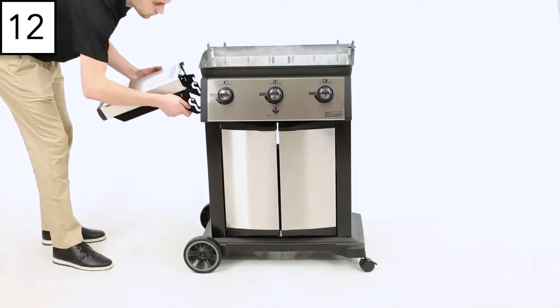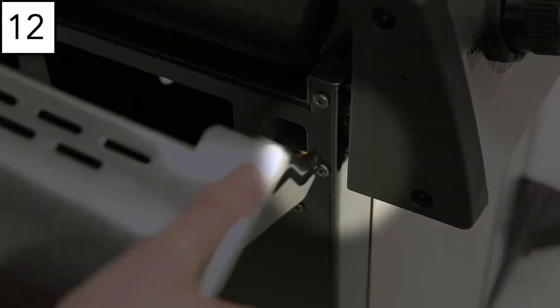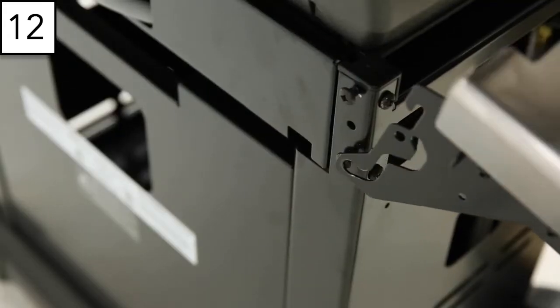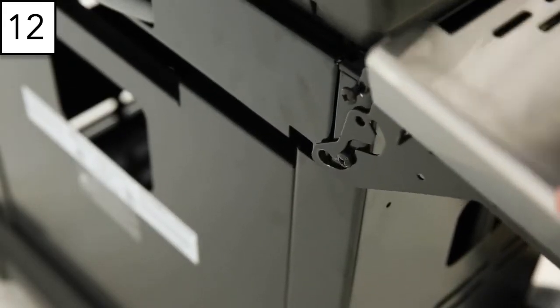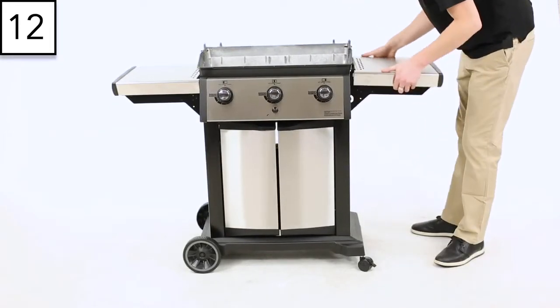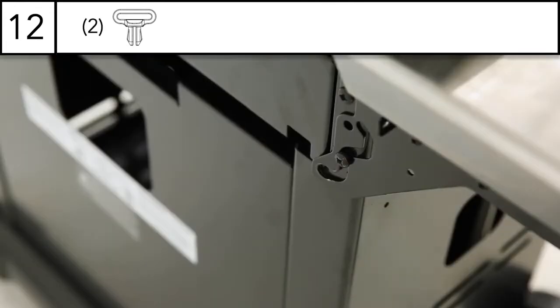Step 12. Attach the side shelves to your grill by sliding the front shelf bracket over the shelf bolt behind the control cover, then repeat with the rear shelf bracket. You can use the supplied shelf lock tab to secure your shelf in the upright position.